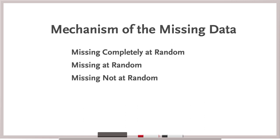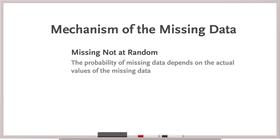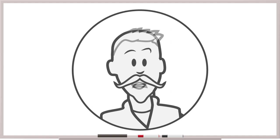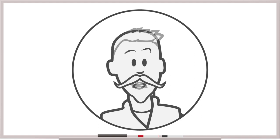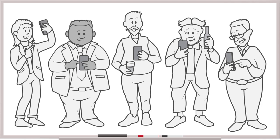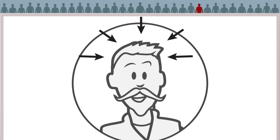Finally, the mechanism is known as missing not at random if the probability of missing data depends on the actual values of the missing data. For example, patients whose hair grew back quickly while taking the study drug feel a surge of confidence. They head out on the town and forget about the study altogether, so they don't report hair growth. In that case, whether or not someone reports the outcome — hair growth — is related to the outcome itself.